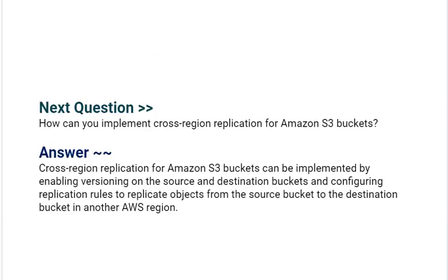Our next interview question is: how can you implement cross-region replication for Amazon S3 buckets? Cross-region replication for Amazon S3 buckets can be implemented by enabling versioning on the source and destination buckets and configuring replication rules to replicate objects from the source bucket to the destination bucket in another AWS region.